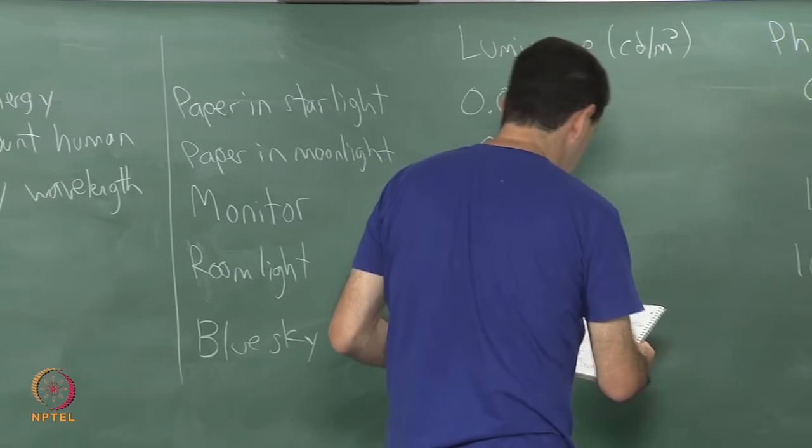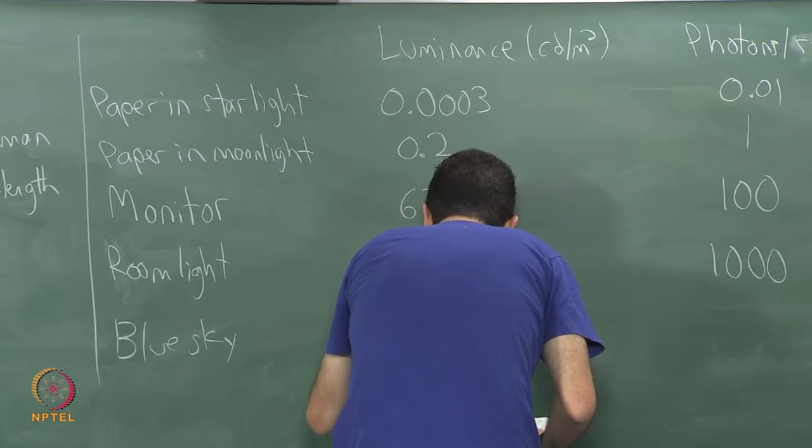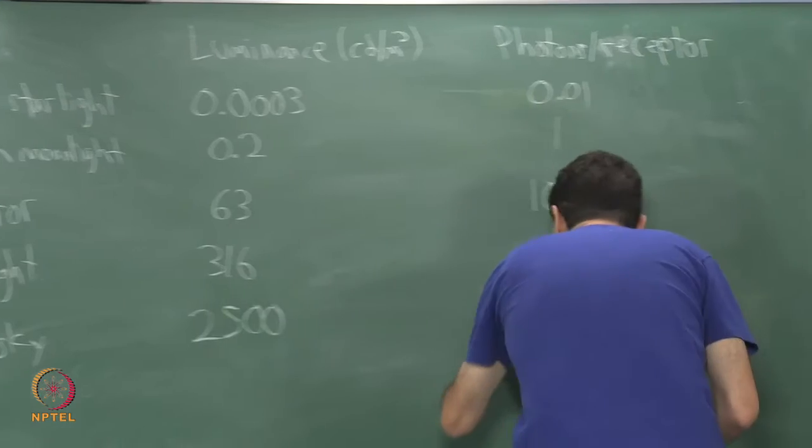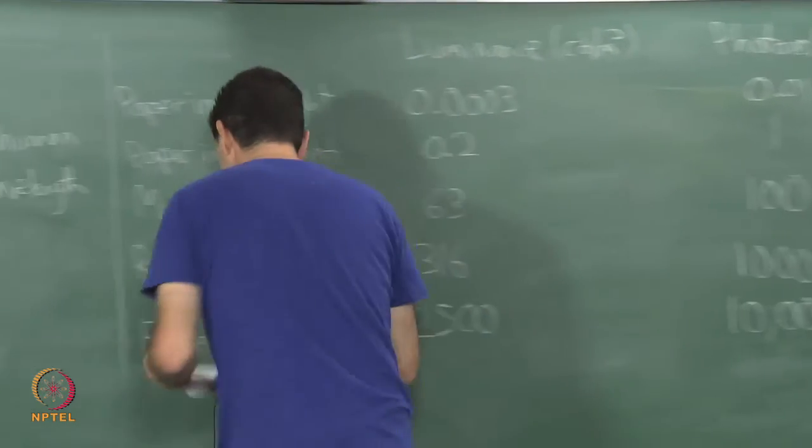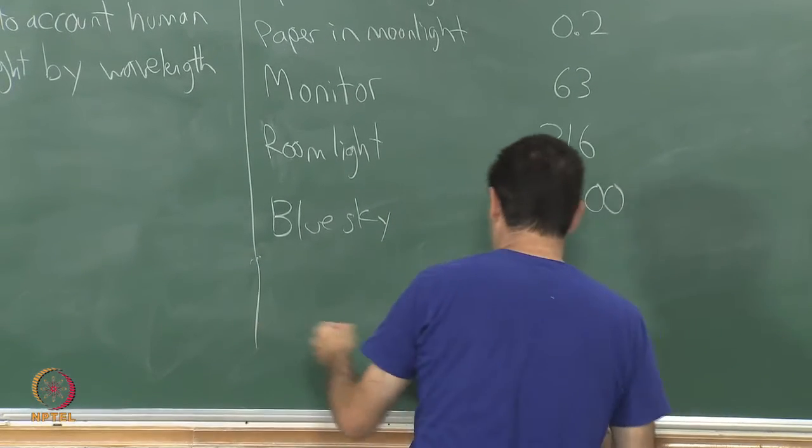looking up at the blue sky is about 2500 - sure, it depends on where you are at in the world - and finally, paper in direct sunlight.